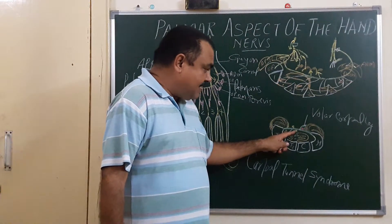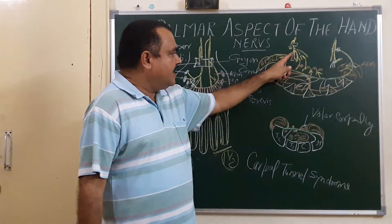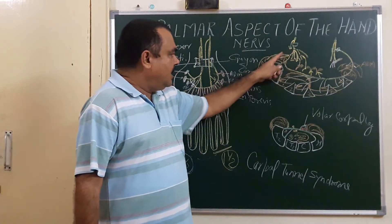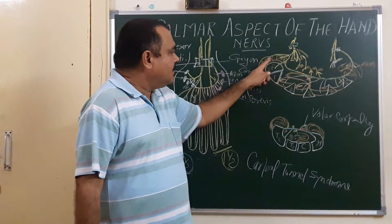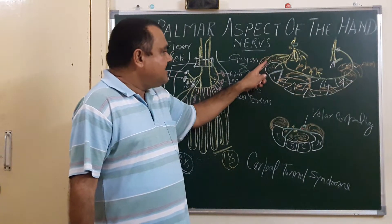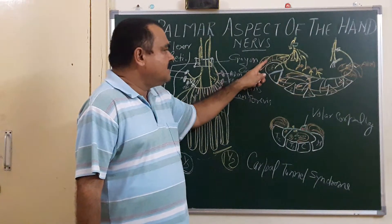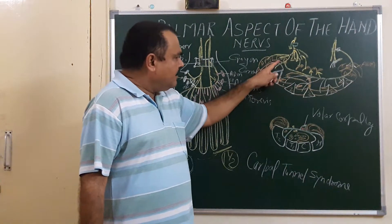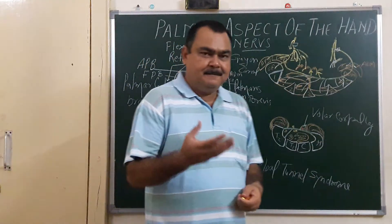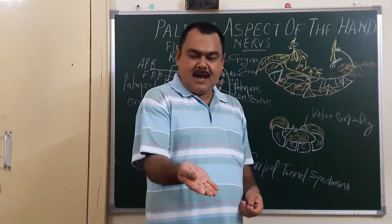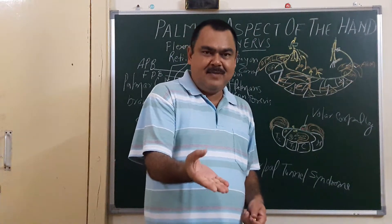If the median nerve is compressed here within the carpal tunnel, then the muscles supplied by the median nerve become paralyzed. These muscles are the abductor pollicis brevis, opponens pollicis, and the superficial head of flexor pollicis brevis. The patient cannot abduct the thumb — this movement cannot occur.